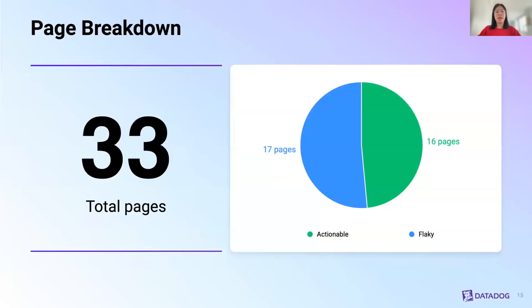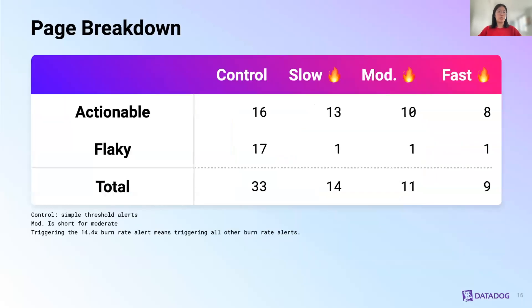Here is a breakdown of our results and findings. In six months, we were paged 33 times by the simple threshold alert — 17 of them were flaky and 16 of them had manual actions taken. Here is a breakdown of what alerts were triggered. The simple threshold alert is our control. When the fast burn rate triggered, the slow and moderate burn rates also triggered. A good thing we can see is that all burn rate alerts did not trigger on most flaky alerts. There's also an interesting spread of pages across different burn rates.